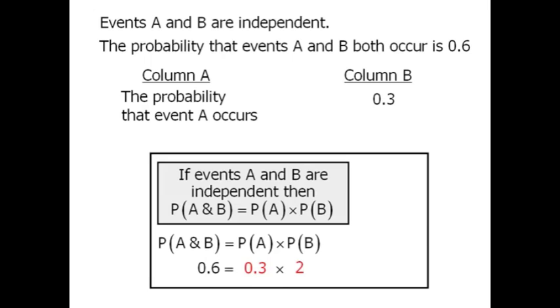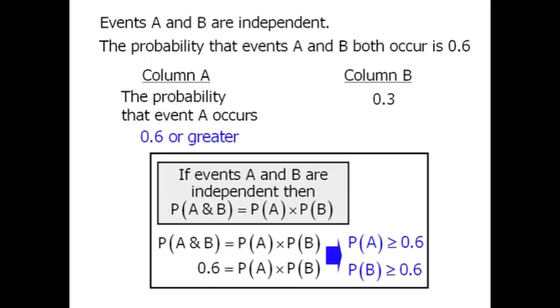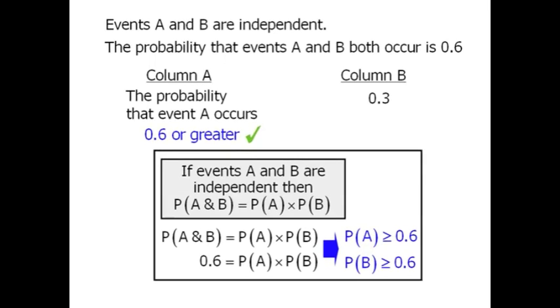So as you can see here, each probability must be greater than or equal to 0.6. So column A is equal to 0.6 or greater, which means column A is greater than column B, which means our answer is A.